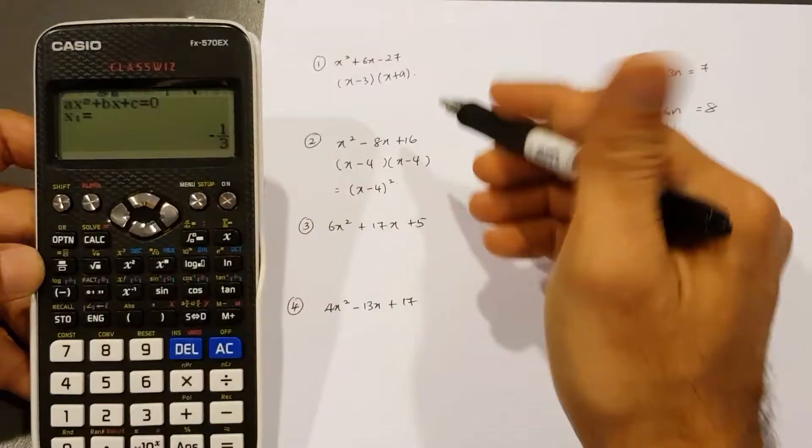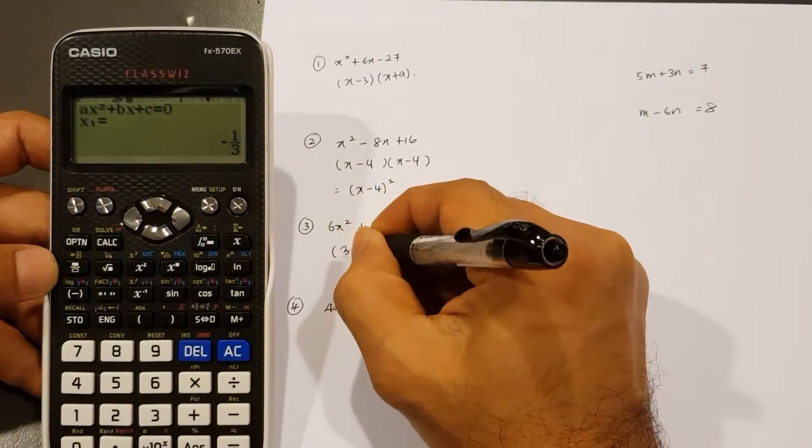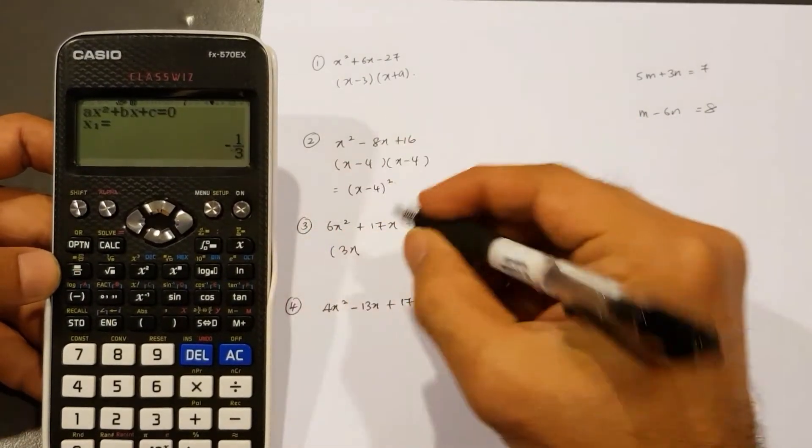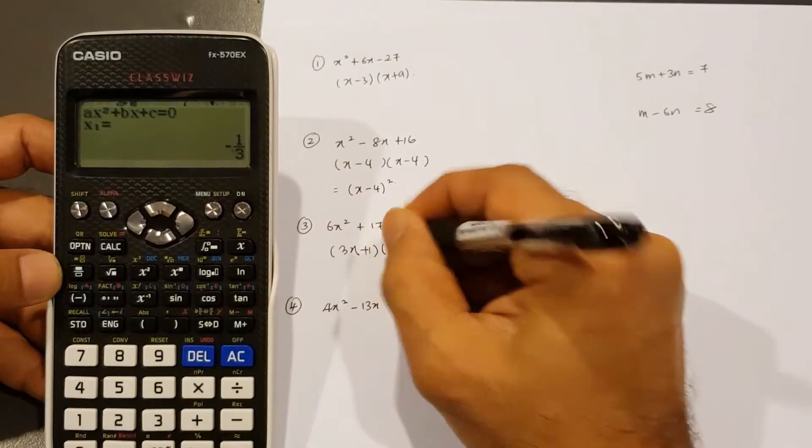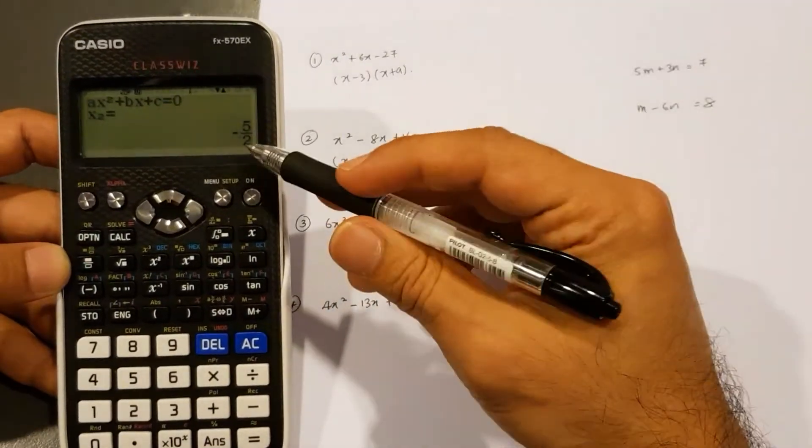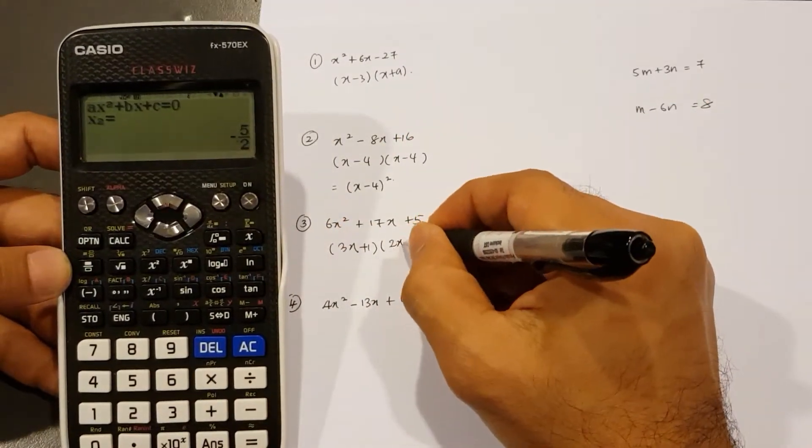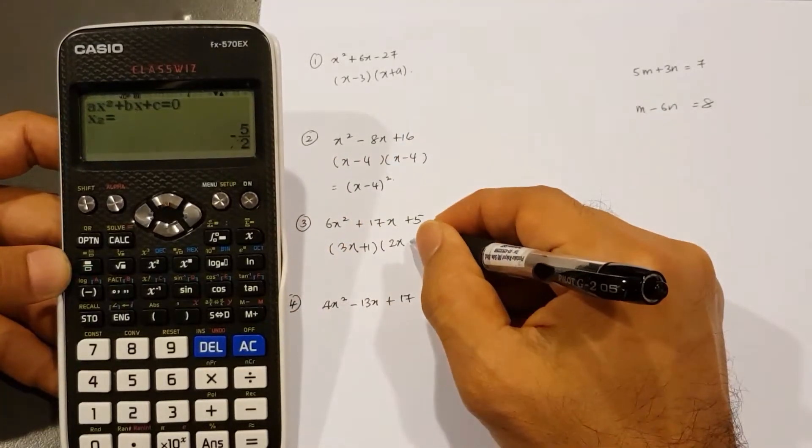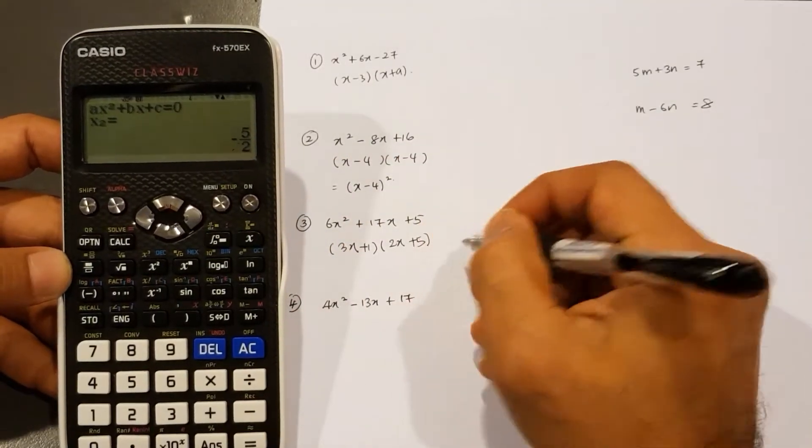The denominator is three, which means I write three X negative one becomes plus one equal again. That's two two X negative five. So it's plus five.